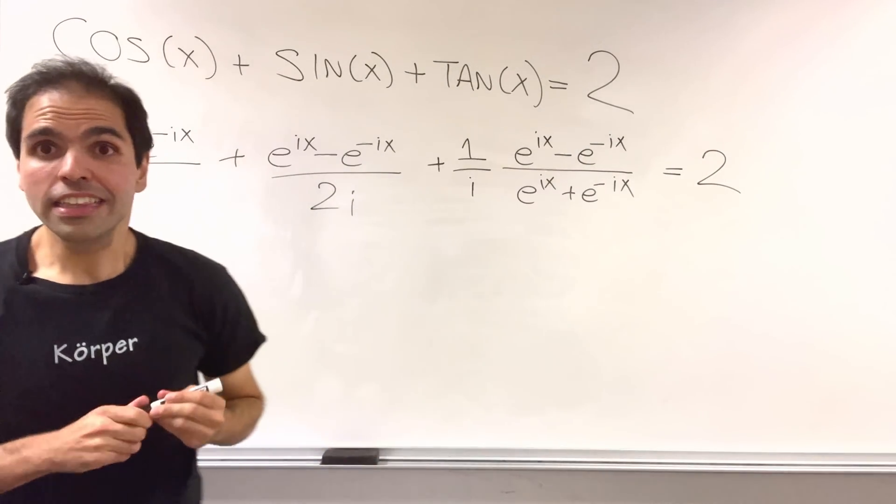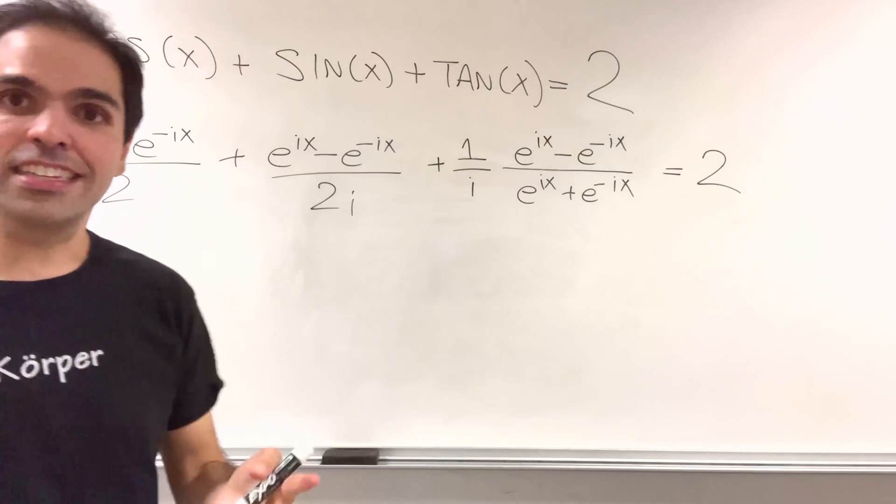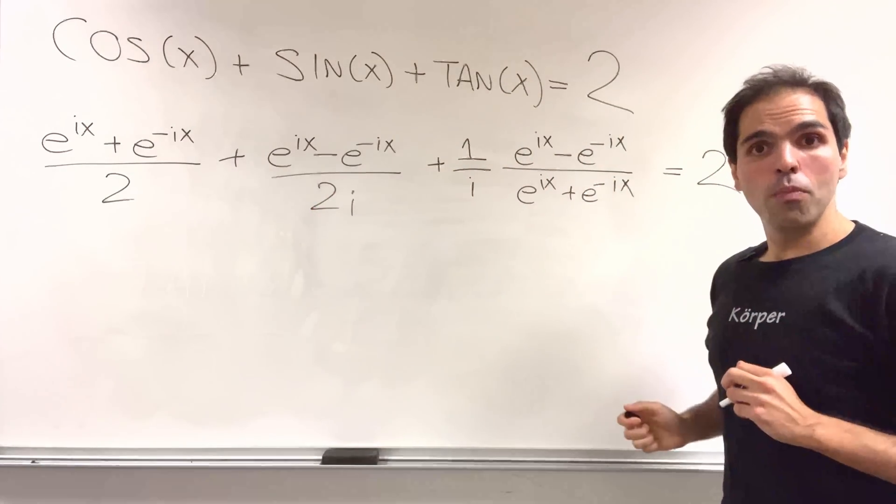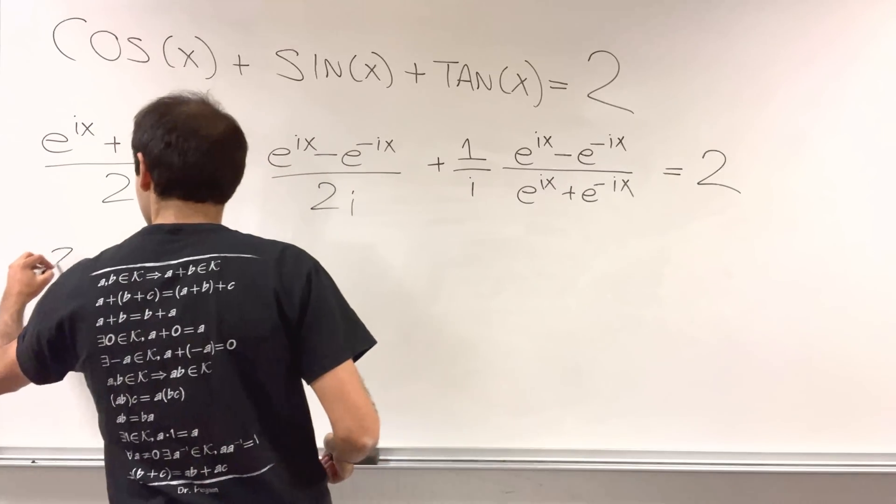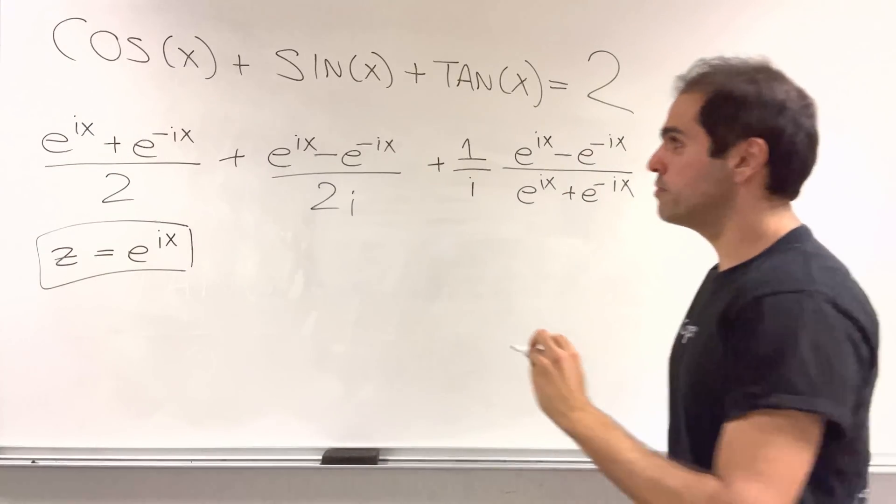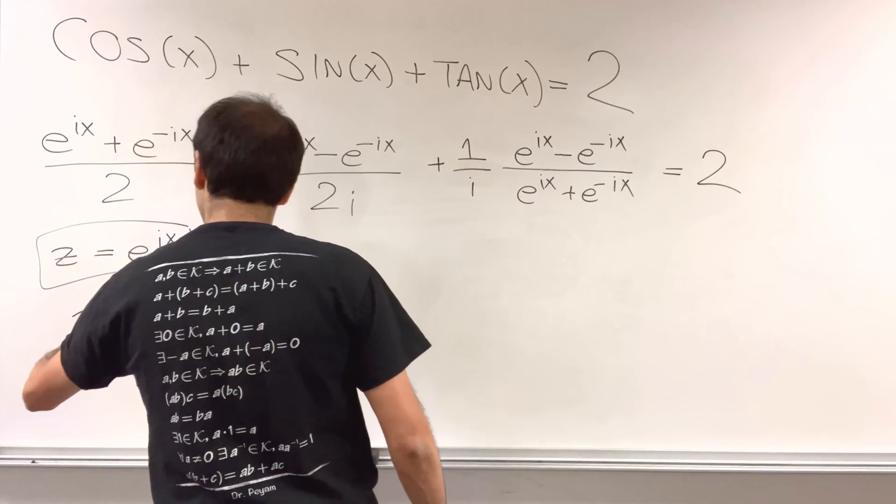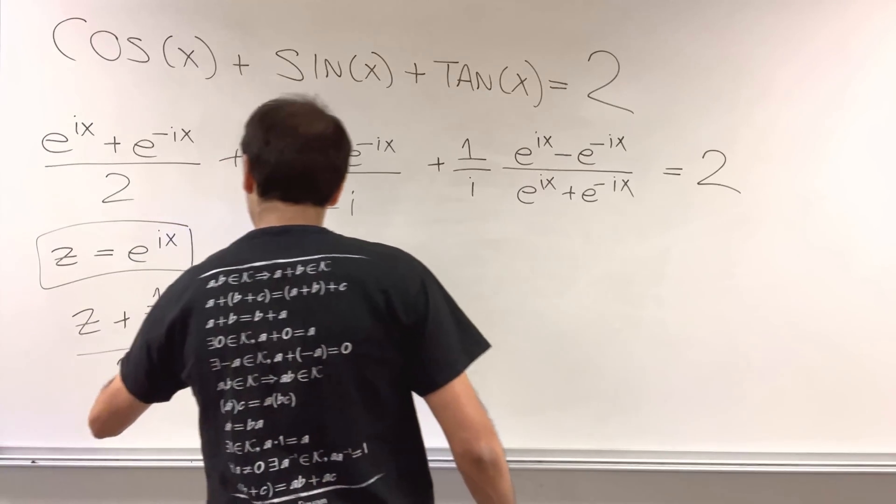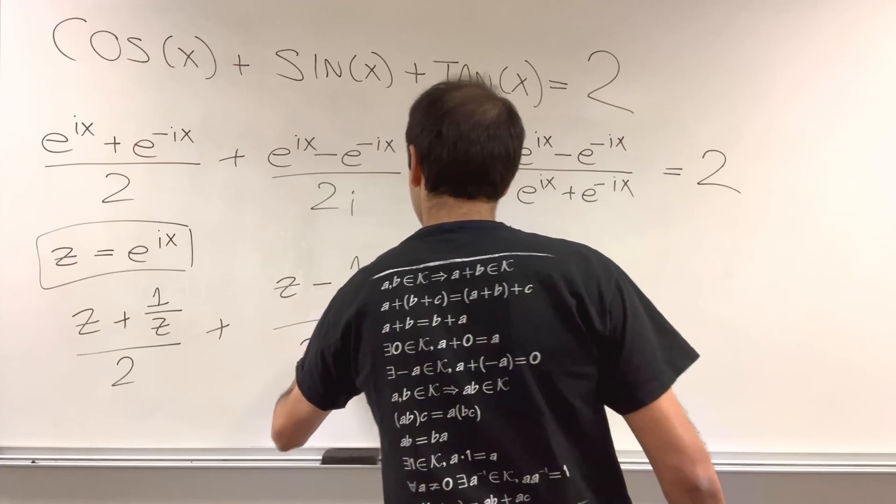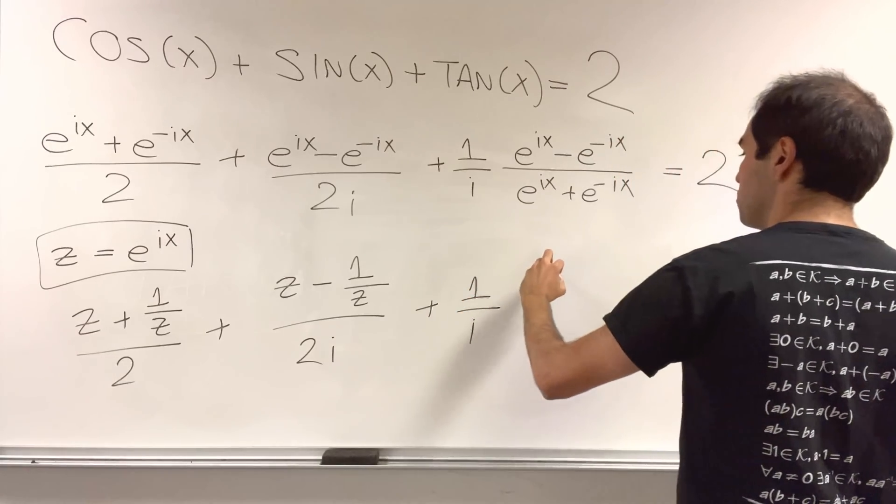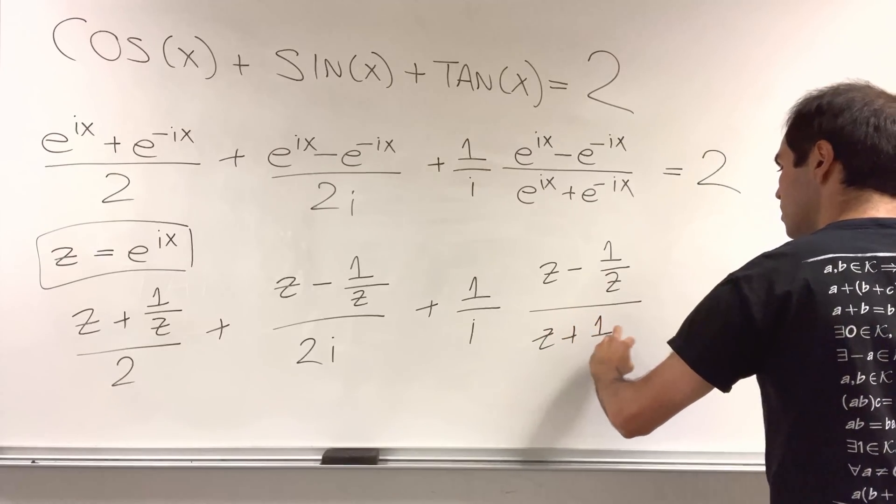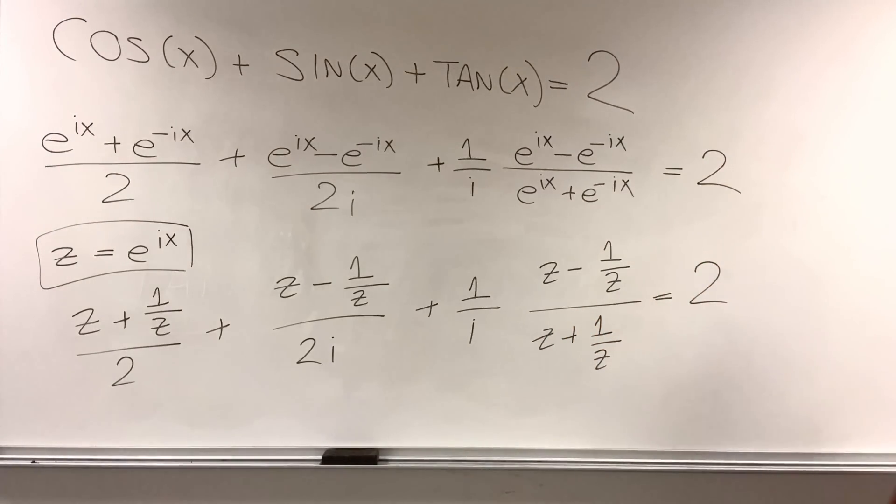Now, why is this so great? This equation, as complicated as it may seem, is actually just a function of e to the ix. More precisely, if you let z be e to the ix, then this just becomes z plus one over z over two, plus z minus one over z over two i, and then plus one over i times z minus one over z over z plus one over z equals two.